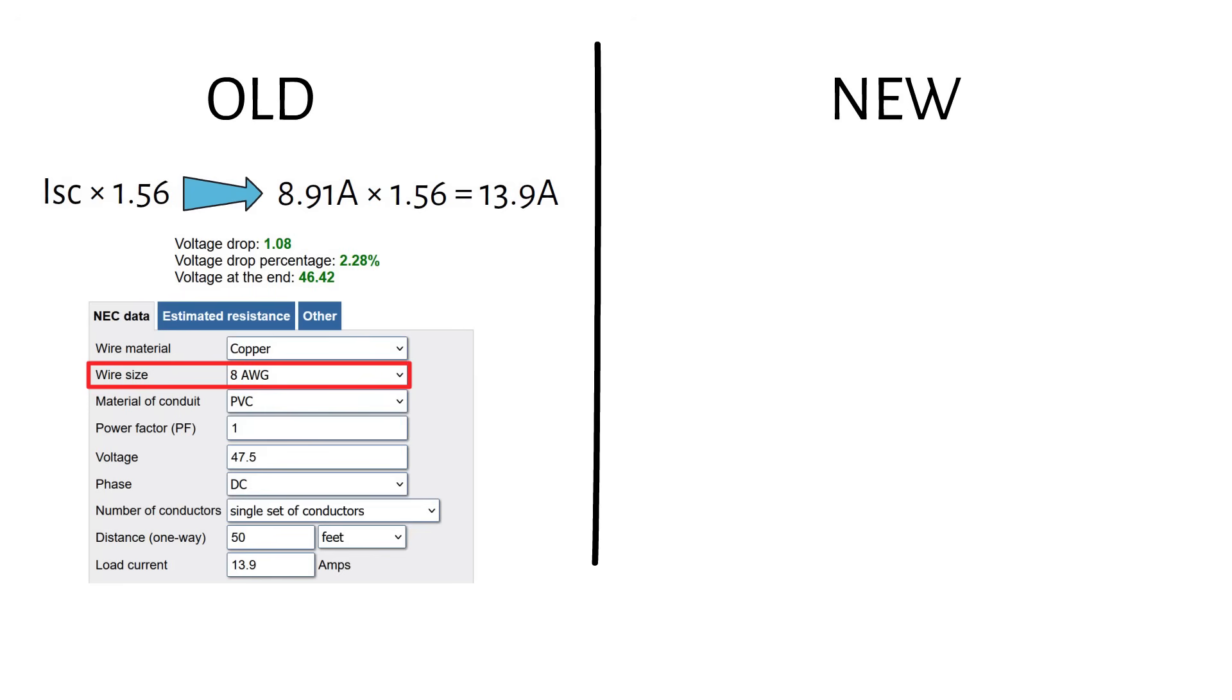And then we adjust the wire diameter to limit the voltage drop to 3%. With those numbers, the calculator tells us we need an 8 gauge or 10 mm square PV cable. And the voltage drop is 2.28%. An 8 gauge PV cable will cost you $77 for 50 feet.